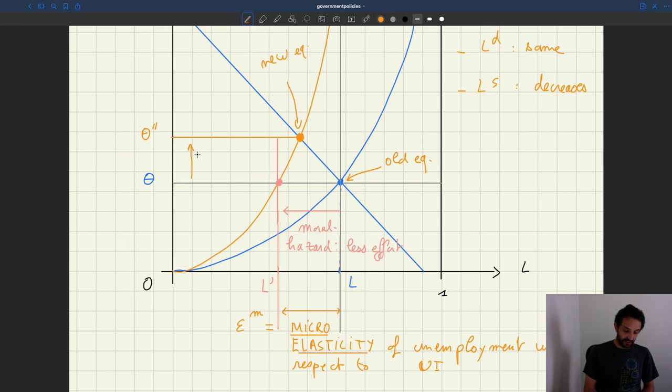What does that mean? Well, the fact that tightness increases basically says that unemployment is not going to increase as much as what you would have thought if you had kept your tightness constant. So less effort brings you to this point here, but then because tightness goes up, you're also going to actually move up the labor supply, something like this. And this is going to limit the effect of UI on unemployment.